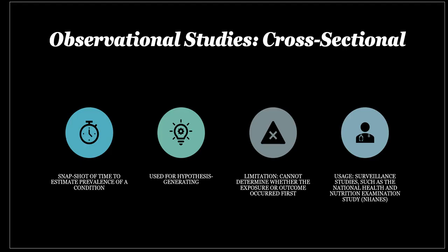Observational studies are really nice because they're a snapshot in time — we're basically observing the population. Cross-sectional studies let us evaluate multiple populations, which is helpful when we want to ask questions and generate a hypothesis. A hypothesis is really a statement, such as 'a high fat, high sugar diet will raise your body fat percentage.' Observational studies help us get to that statement. The limitation is we can't determine whether the exposure or the outcome came first.